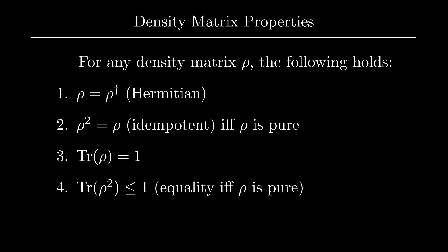Moreover, by convexity, we also have that the trace of rho squared is less than or equal to 1, where equality only occurs if and only if the state is pure. For this reason, the trace of rho squared is also referred to as the purity of the state.